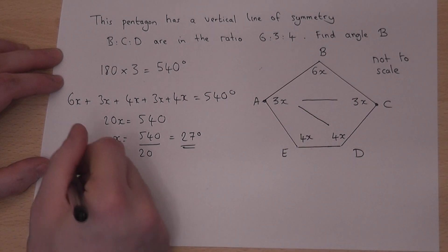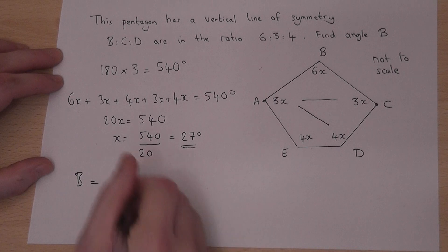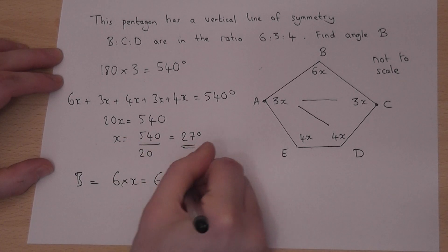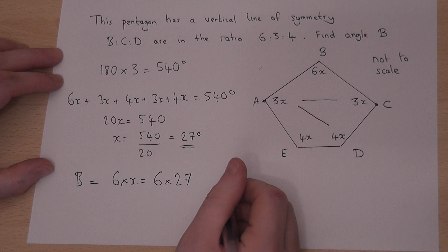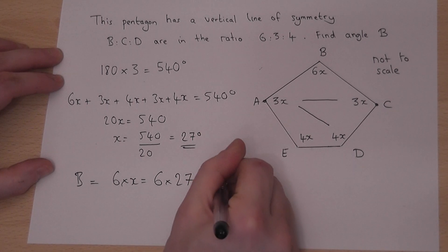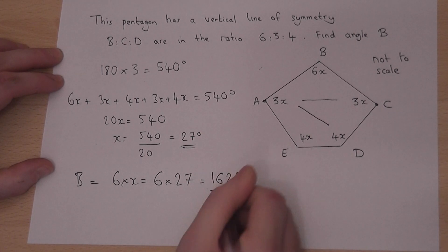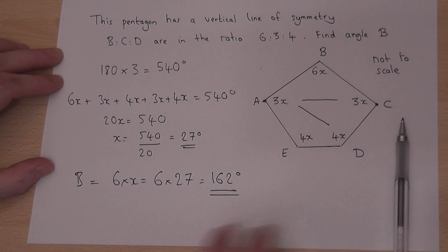So to find B, I just do 6 lots of x which is 6 lots of 27. And 6 times 27 is 162 degrees. So we have found the size of angle B.